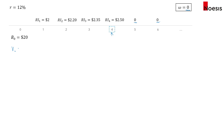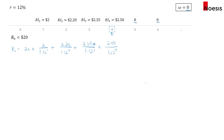The intrinsic value formula is: 20 + 2/1.12¹ + 2.20/1.12² + 2.35/1.12³ + 2.50/1.12⁴, which gives us the answer.